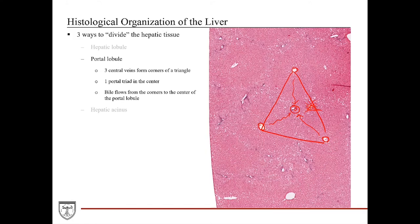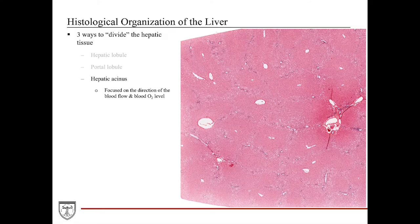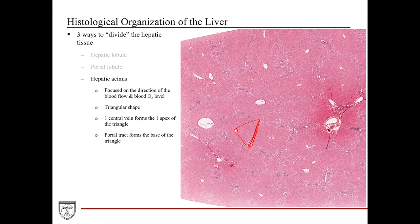In the hepatic acinus, we focus on blood flow and its content. A single acinus is triangular with the central vein at the apex, the portal tract forming the base, and two portal triads forming the remaining corners. Hepatic acini often share the portal triad and tract with neighboring acini, so it is not uncommon to see a hepatic acinus described as a diamond-shaped double feature.